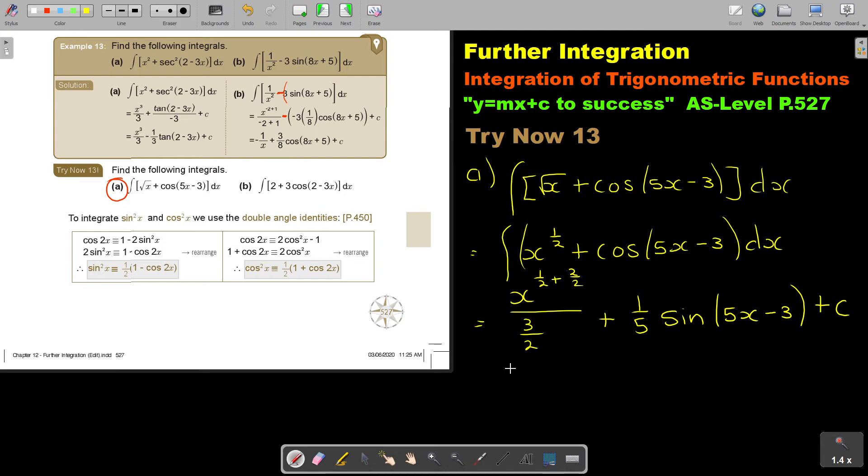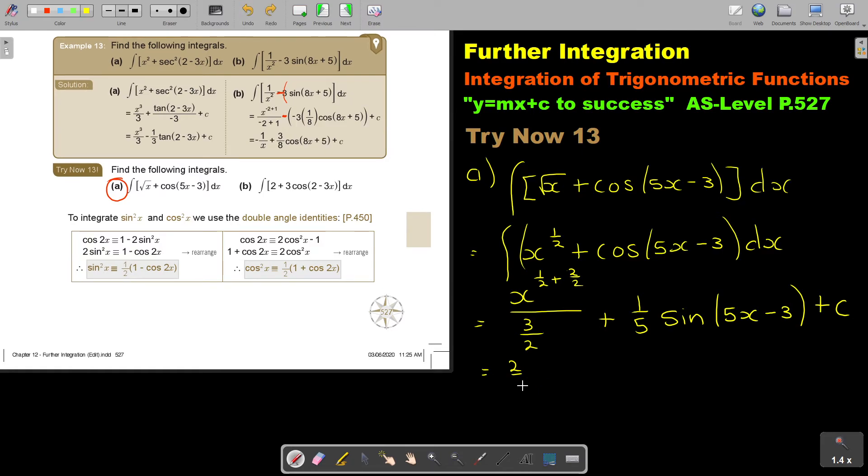So if I simplify this, this is going to be 2 over 3, let's just get this pen correct, 2 over 3, x, 3 over 2, plus 1 over 5, sin, 5x minus 3, plus c.